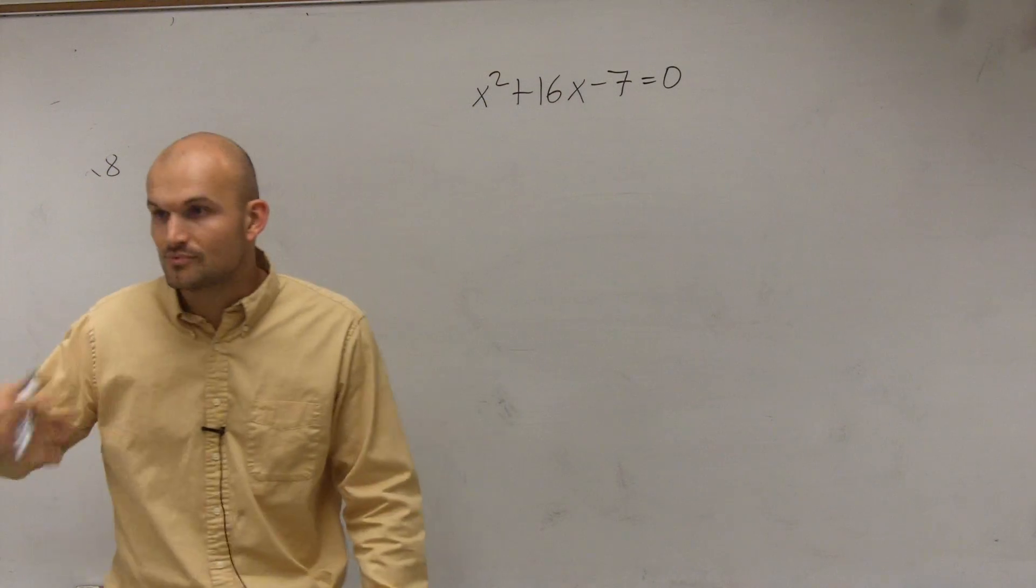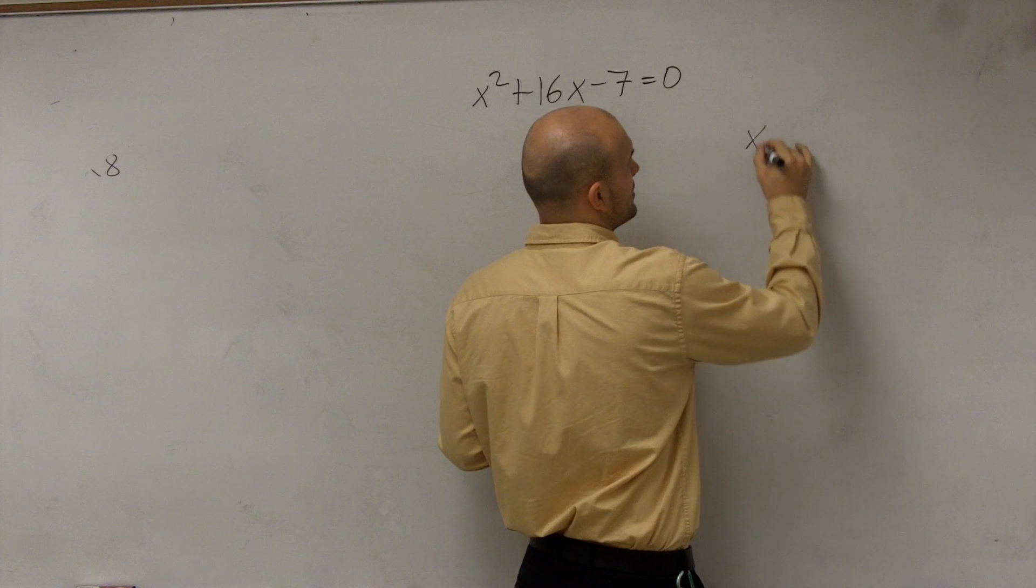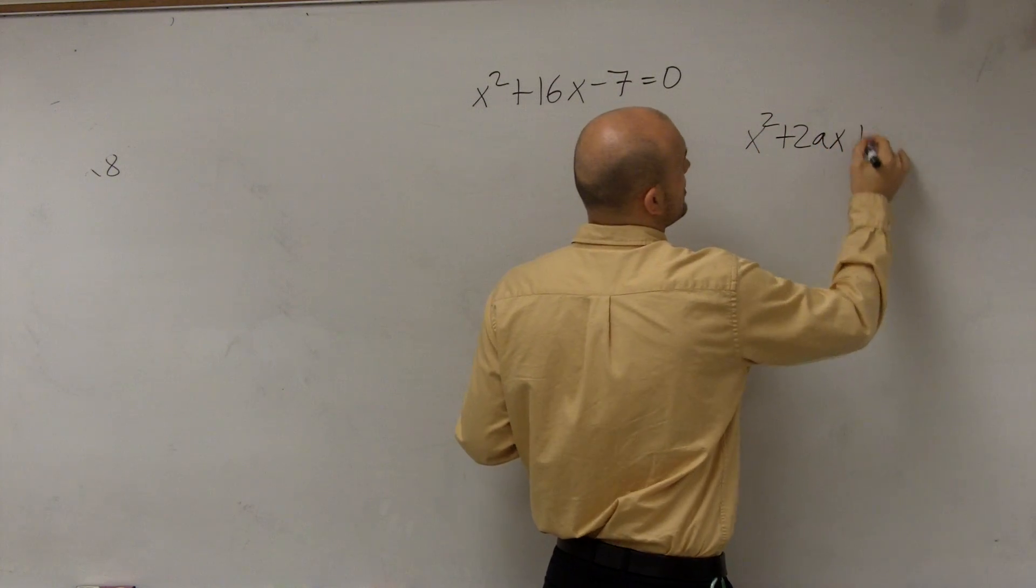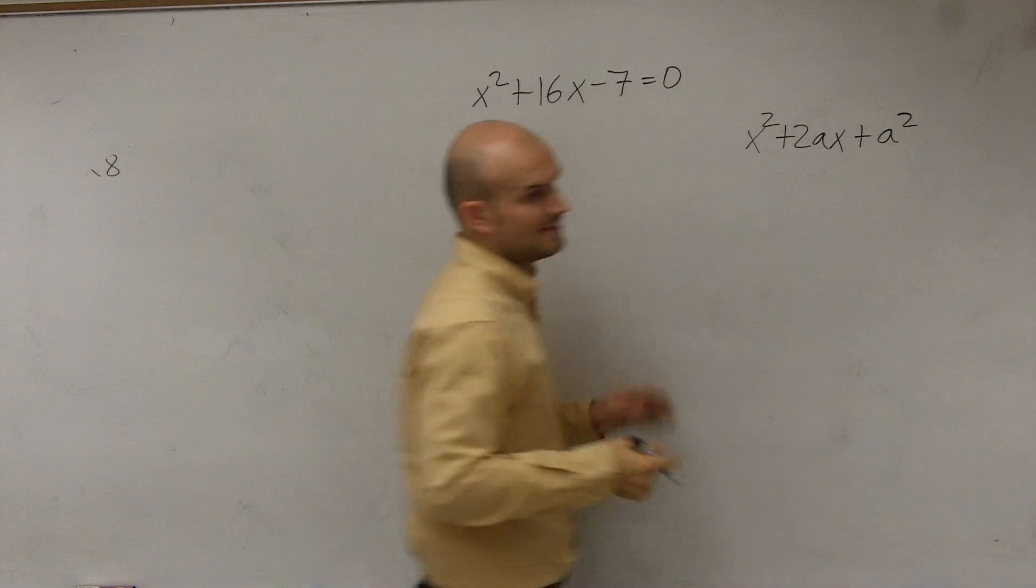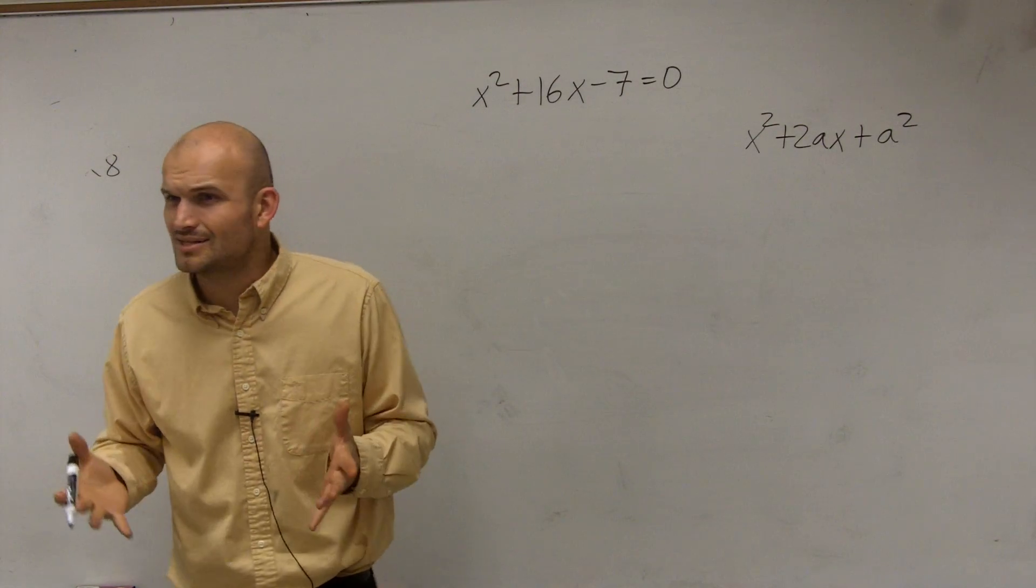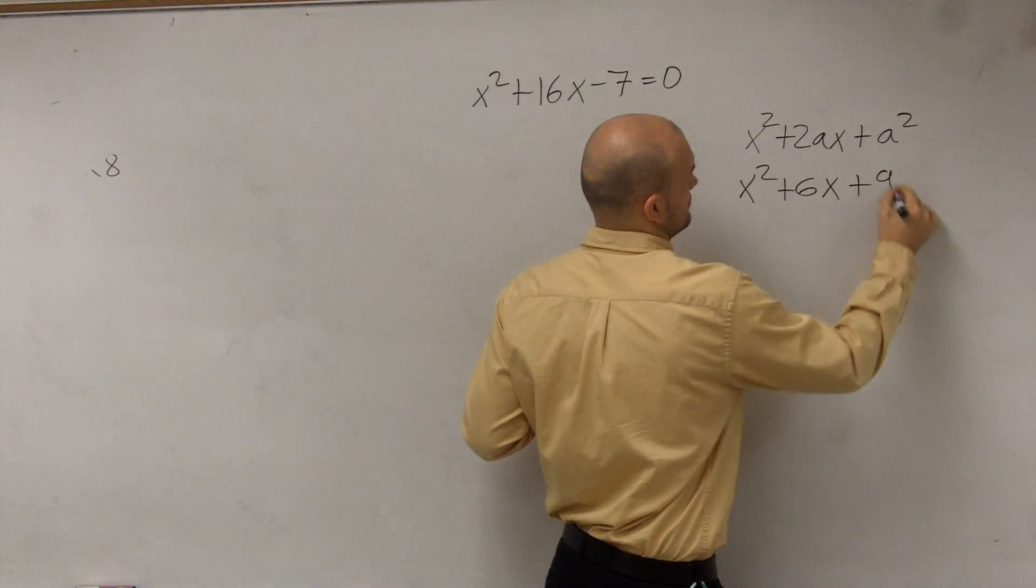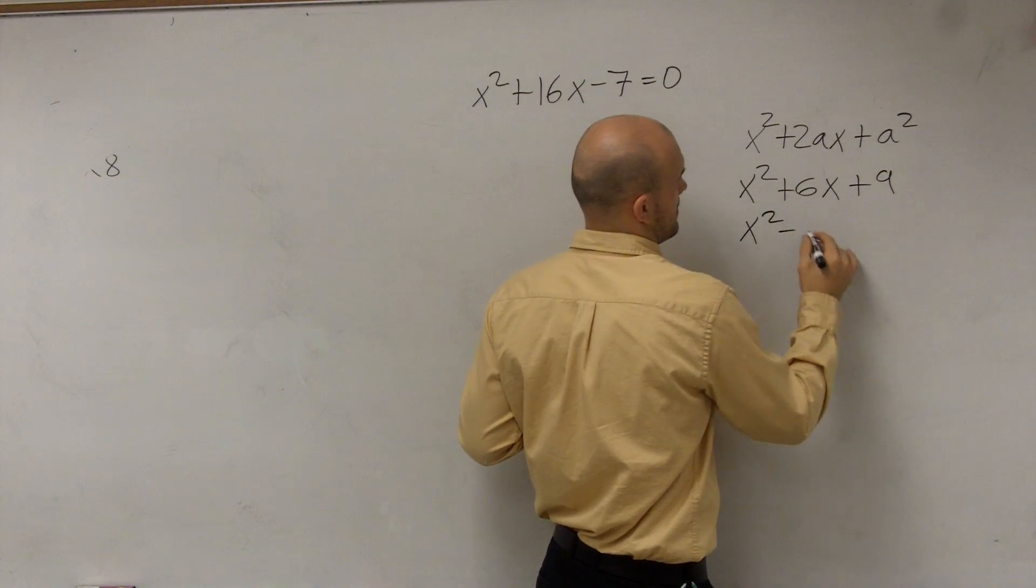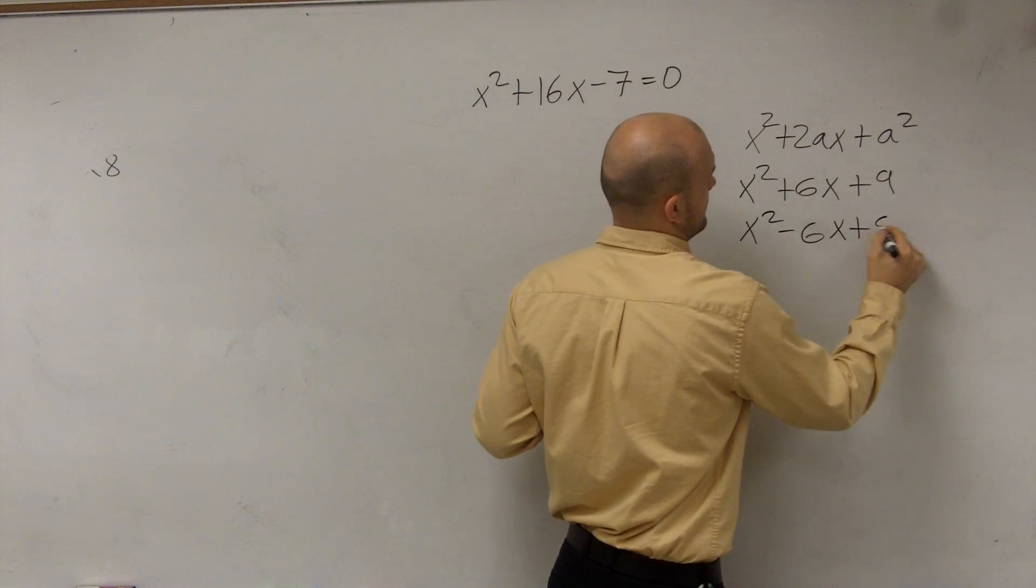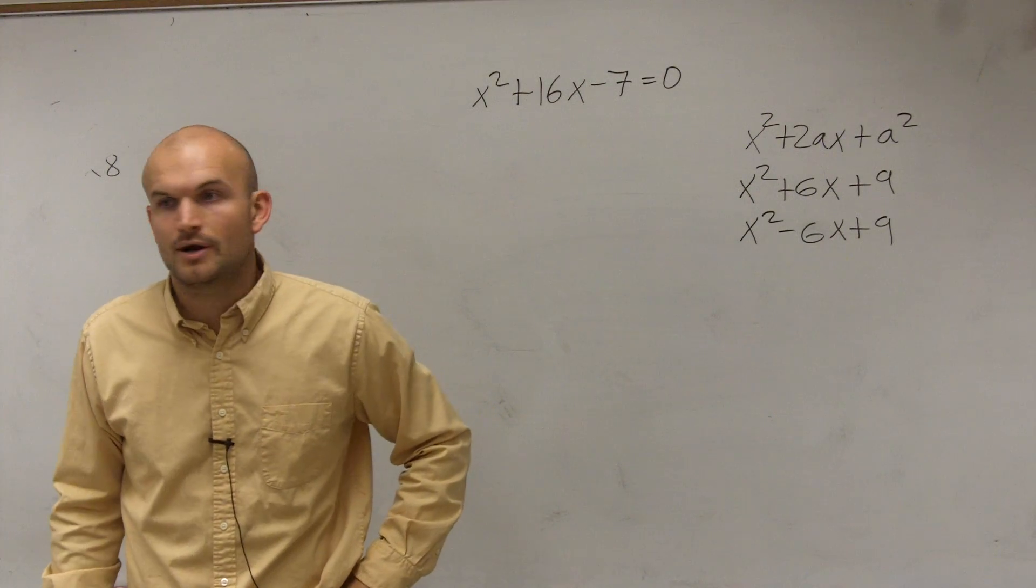Those are two ways you can do that if it's not factorable. So, what exactly is completing the square? Well, let's review with factoring for a second. This is what we call a perfect square trinomial: x squared plus 2ax plus a squared. That's the formal definition of a perfect square trinomial. Now, what exactly does that mean? Well, here's two examples. Here's two examples of two perfect square trinomials.